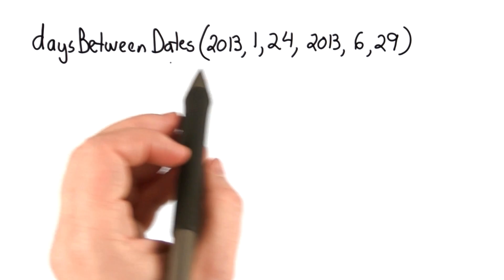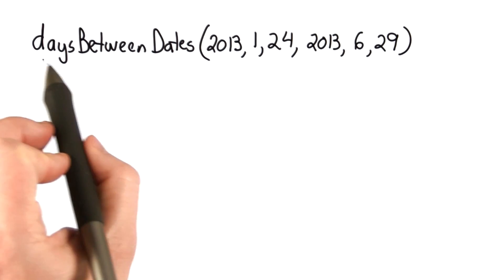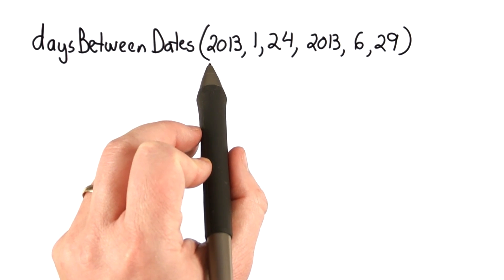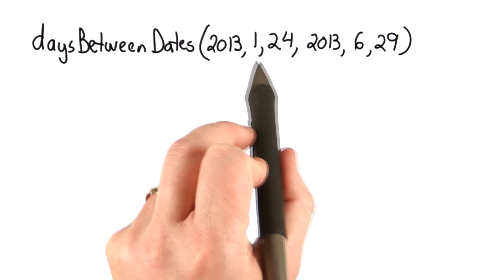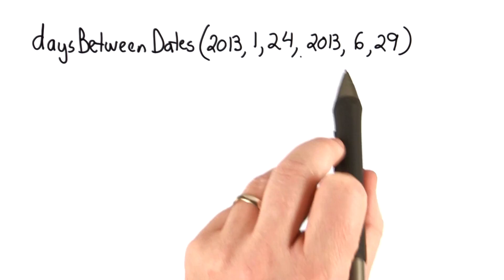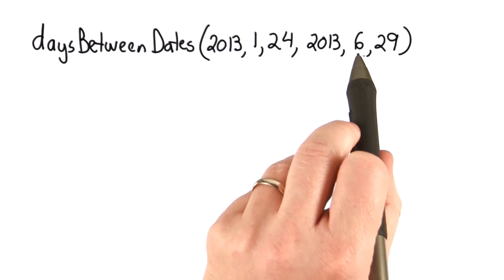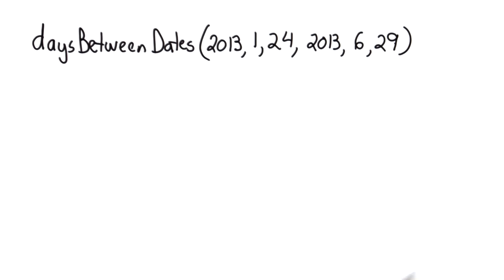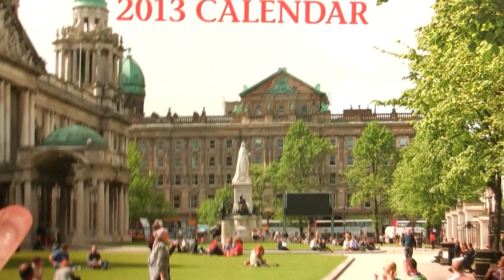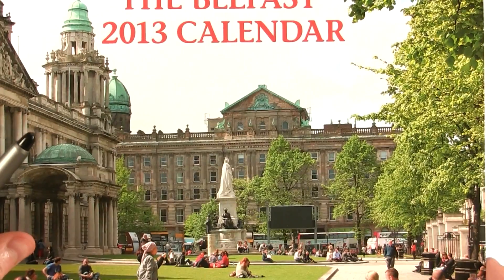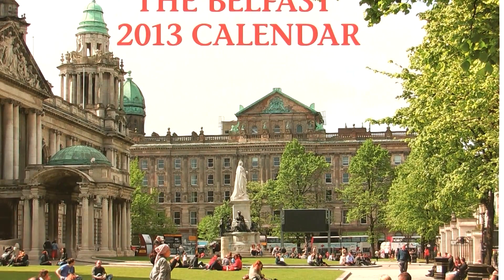So let's try an example. Suppose we wanted to find the days between dates: 2013, January 24, and 2013, June 29. If we were going to do this as a human, we might look at a calendar, and I happen to have a calendar handy.